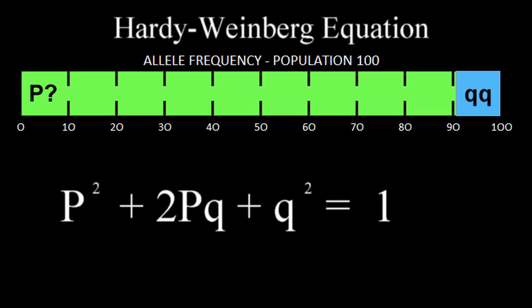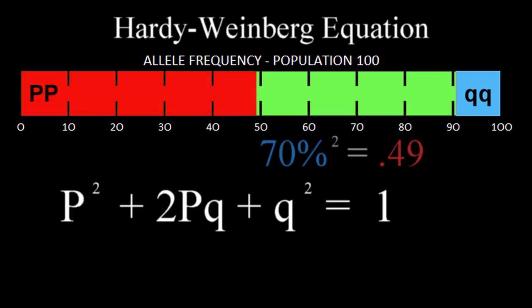This is the Hardy-Weinberg equation. Knowing the number of QQ members in the population is 9%, getting the square root, we arrive at 30%, the percentage of the population with that gene. Subtracting that number from 1 to get 0.7, and then squaring it, we get 0.49, the 49% that has the double P alleles.